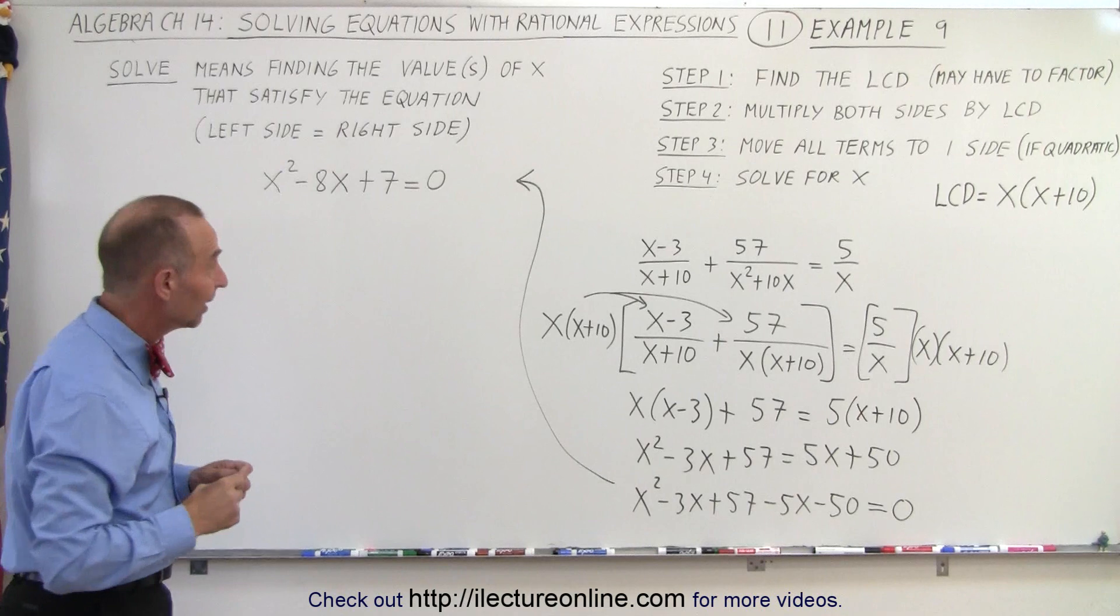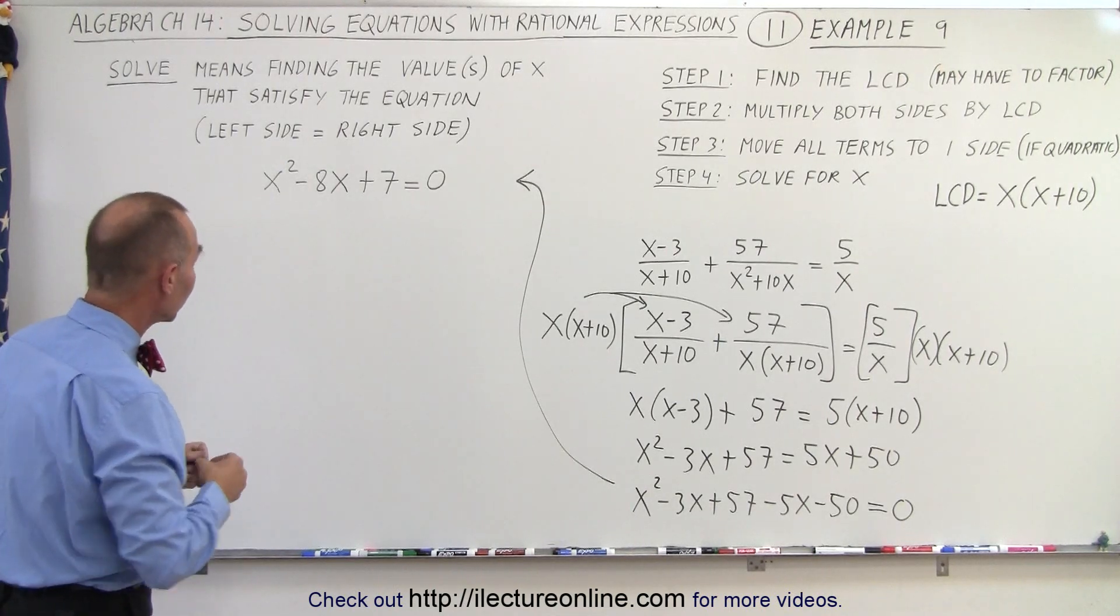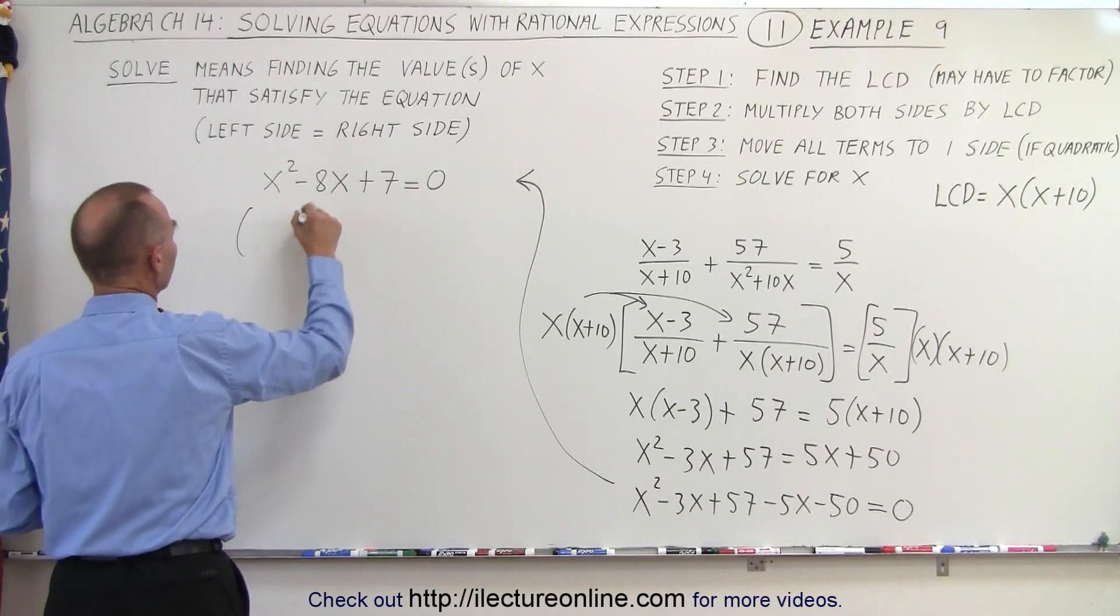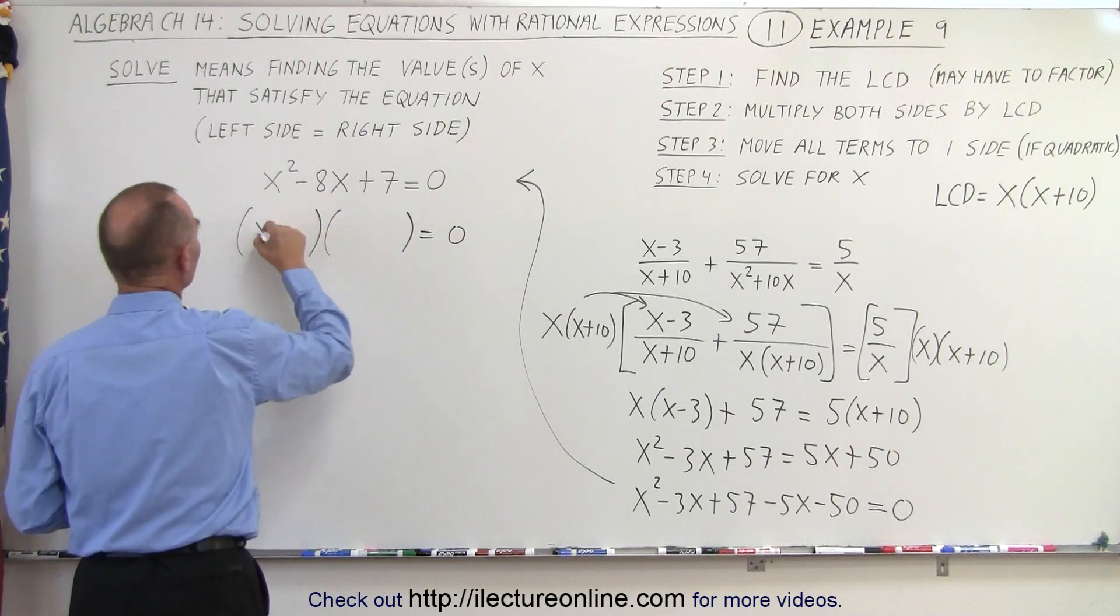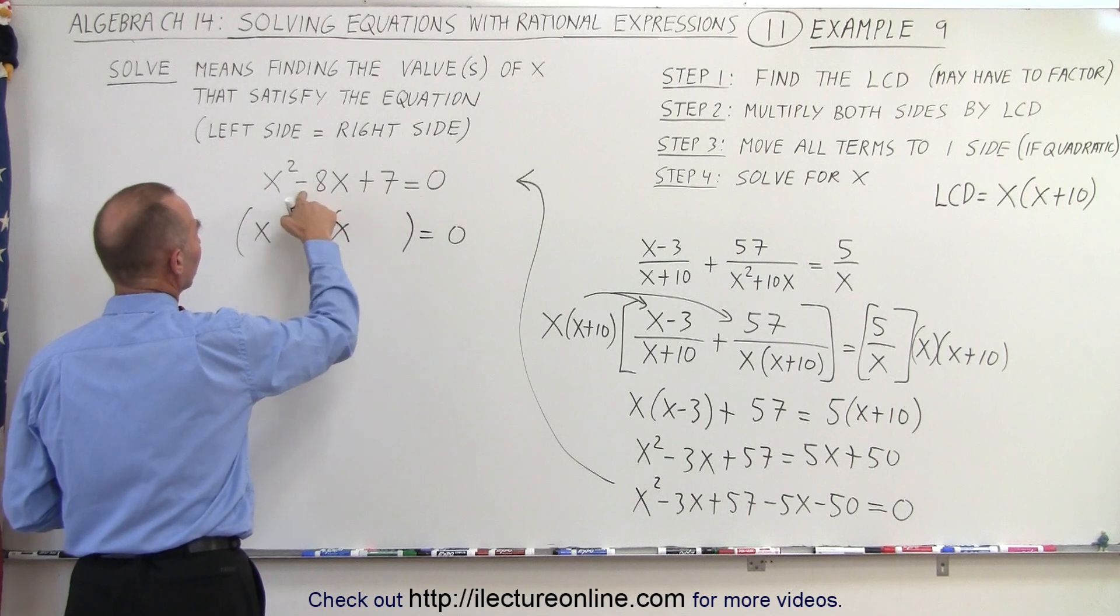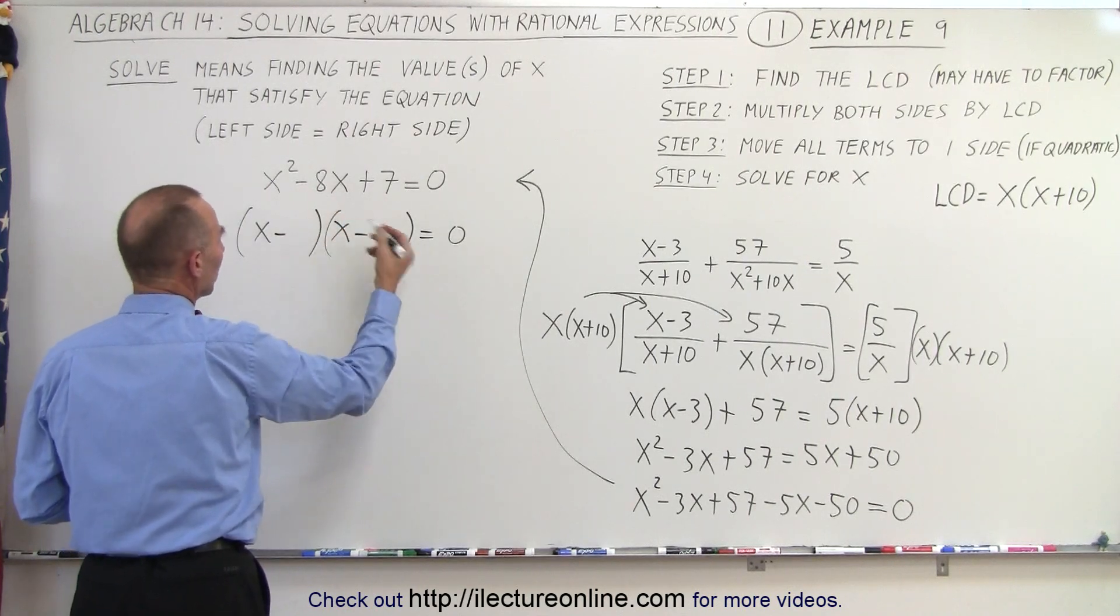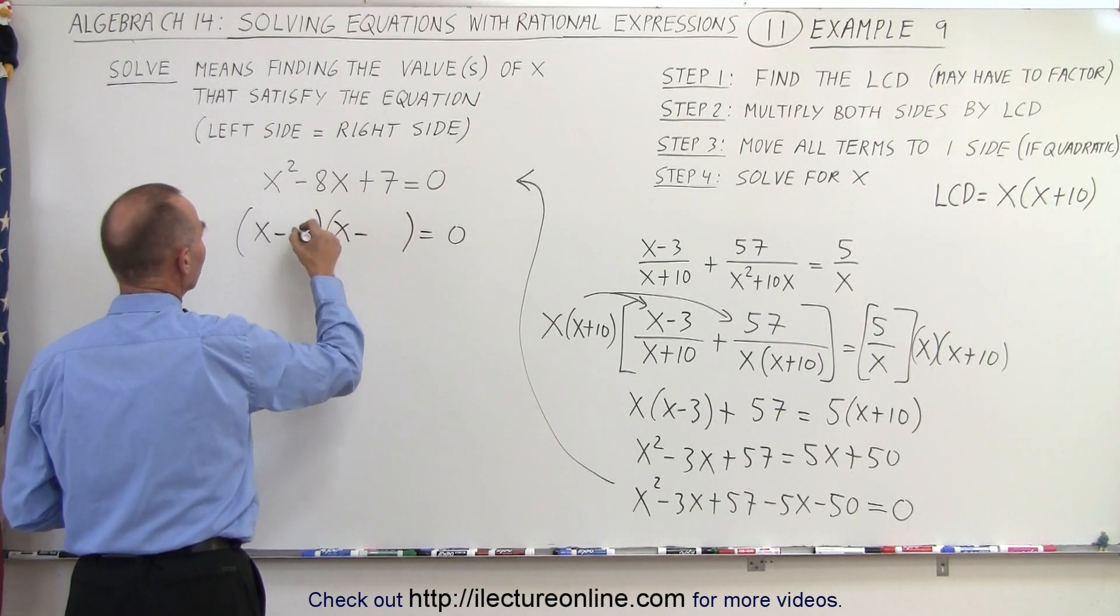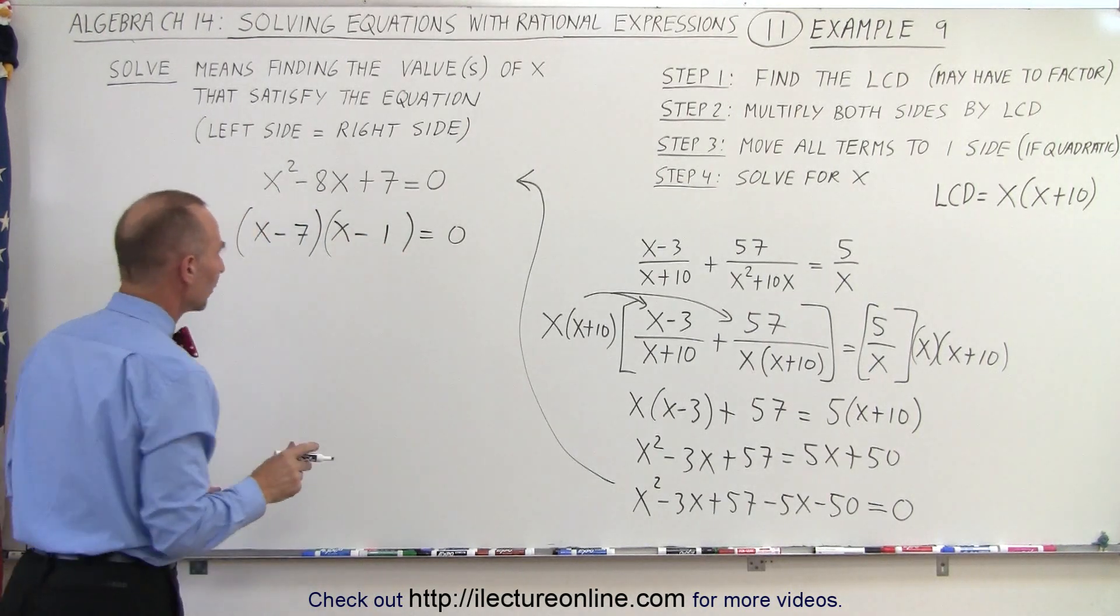And notice that it's probably factorable. So let's go ahead and try it. We have an x and an x. Notice that both sides must be negative because this is positive and that's negative. And when we multiply we get 7, add we get 8. So that's 7 and 1 and that should work out.